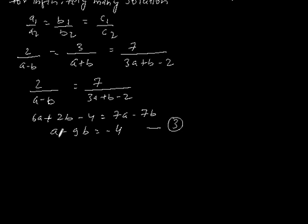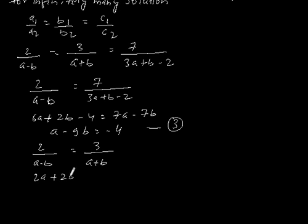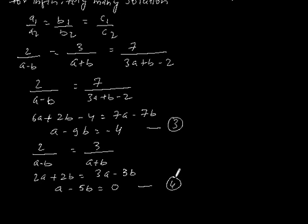Again, taking 2 by (A minus B) is equal to 3 by (A plus B). By cross multiplication, we get 2A plus 2B is equal to 3A minus 3B. This gives A minus 5B is equal to 0. Let's say this is equation 4.